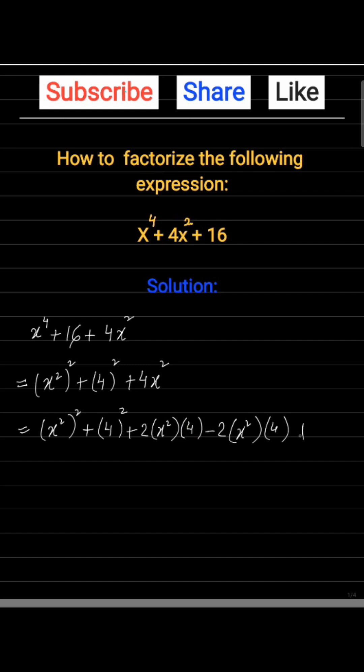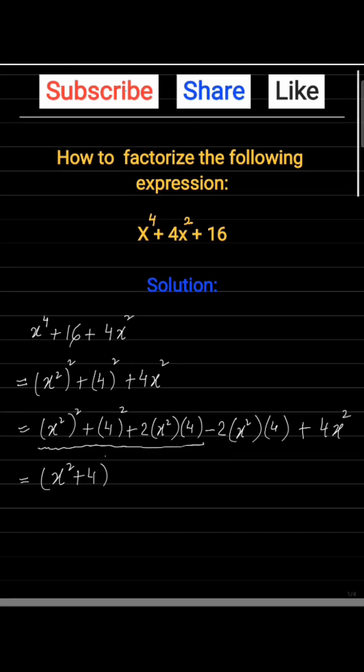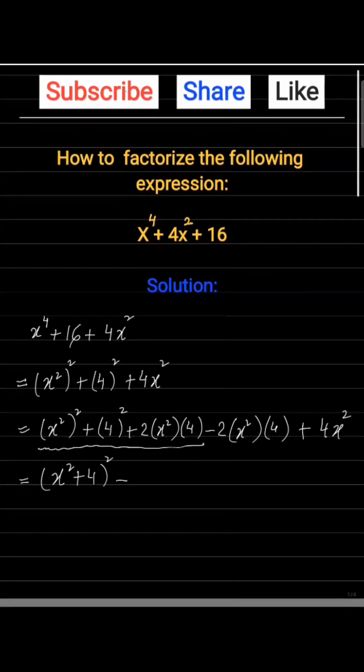Now the first three terms form a complete square of (x² + 4)². And we solve the rest of the expression: minus 2(x²)(4) is -8x².